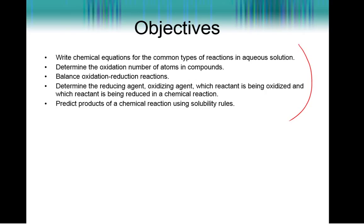We're going to look at how to write chemical equations for some of the reactions. We're going to look at oxidation numbers of atoms and compounds, and then we're going to balance redox reactions. We're going to specifically do that using the half-reaction method. And then we're going to look at identifying the reducing agent, oxidizing agent, what reactant is being oxidized, and what reactant is being reduced.